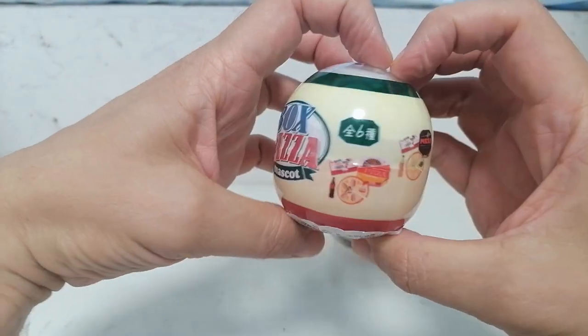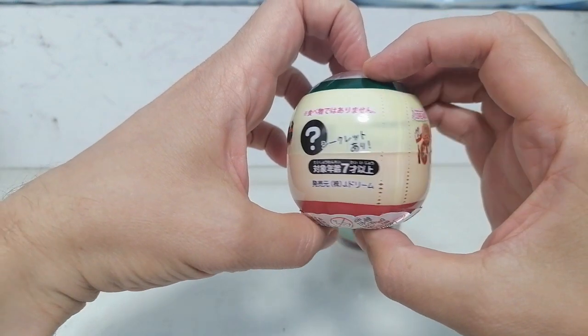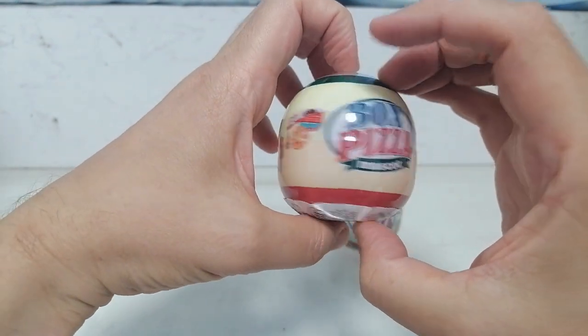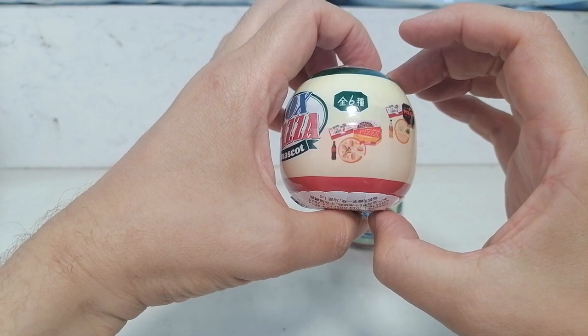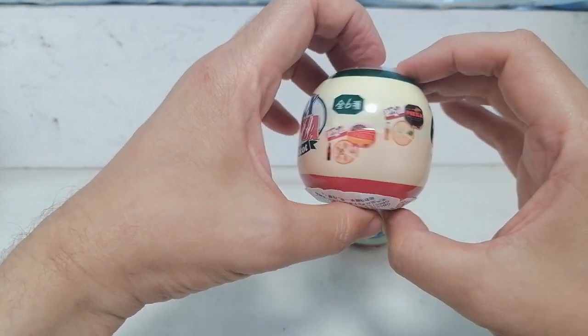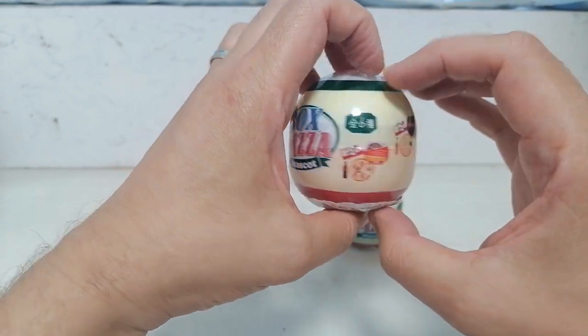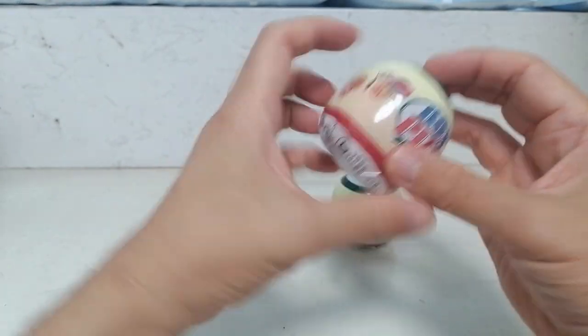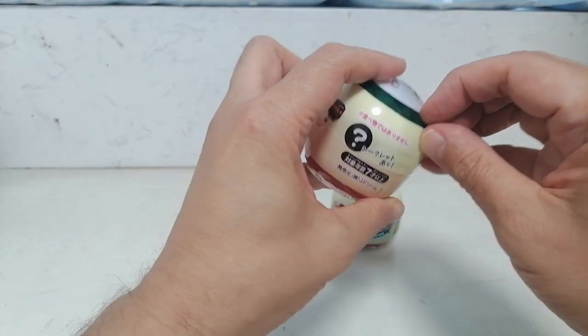Let's take a look at the outside of the first one. Looks like there are five possibilities, well six possibilities, five ones that they'll tell you and then one mystery one. Anyway, let's open it.